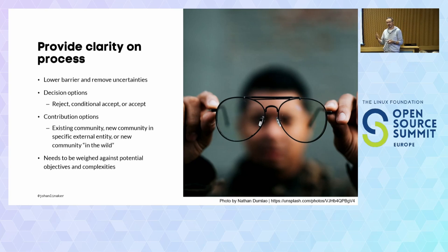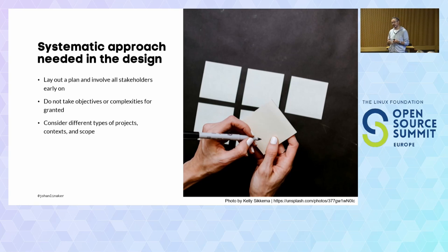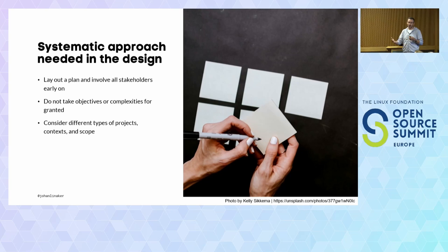There are different benefits and negatives with each of these options that you need to weigh against each other. You need to have a systematic approach in laying out and structuring this contribution process, really involving the stakeholders and getting their buy-in from the start. For example, marketing is often forgotten here, but also IPR, legal, engineering, ecosystem partner management, C-level, and business management — these are all stakeholders that you should involve from the beginning.